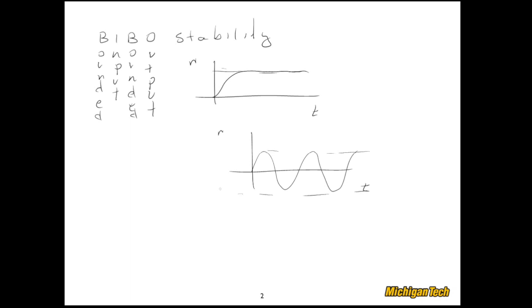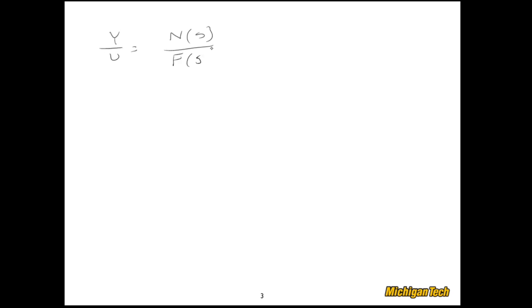Now let's come up with a few checks for BIBO stability. And of course, we're looking at linear systems, so we can have a transfer function which is an output Y over some input U or R, like I was using on the previous pages. And let's say that we write that as some numerator function of S divided by a denominator of a function of S, and I'll use F of S for that.